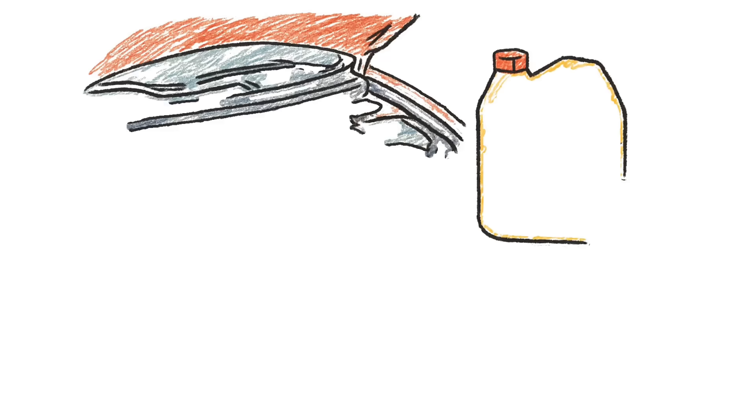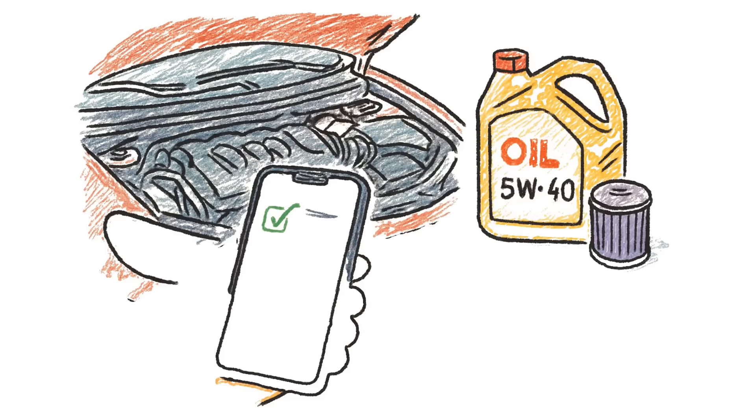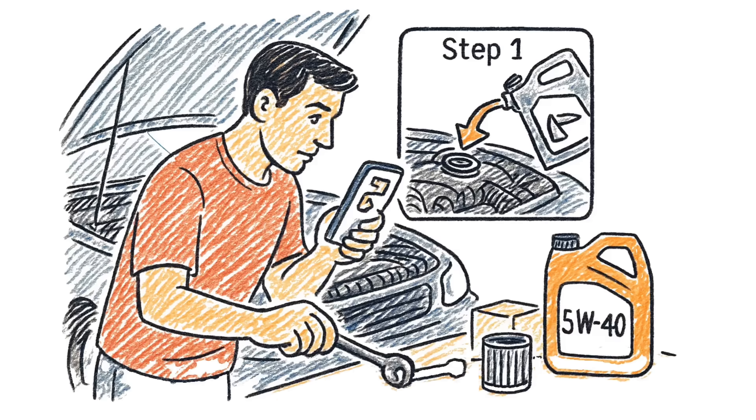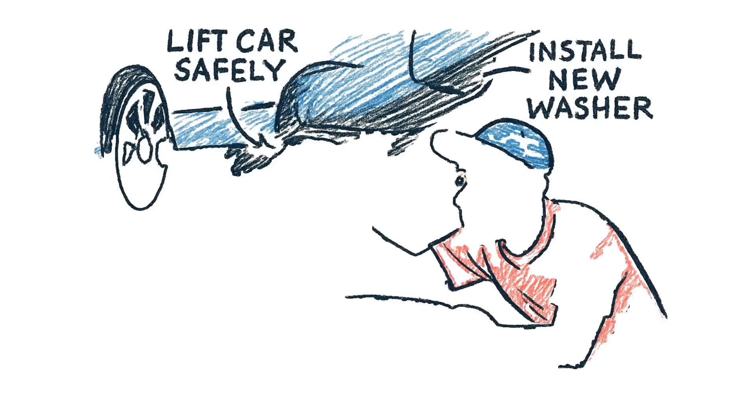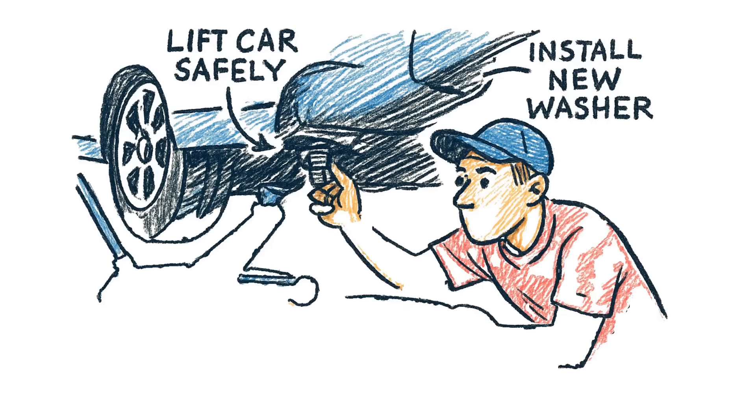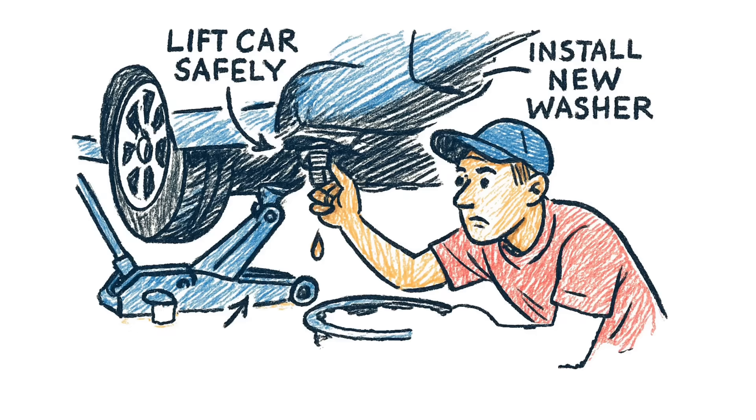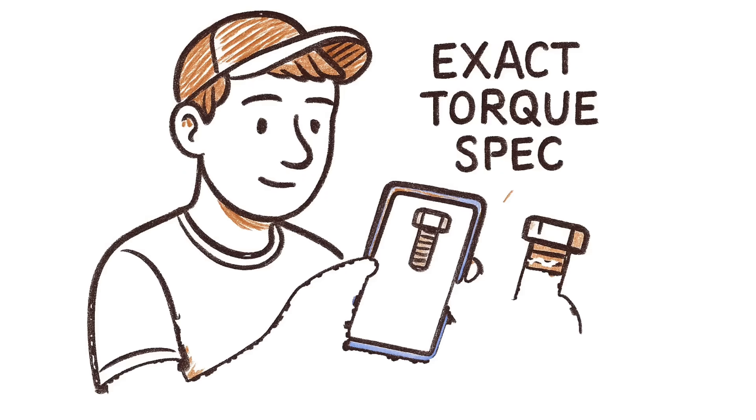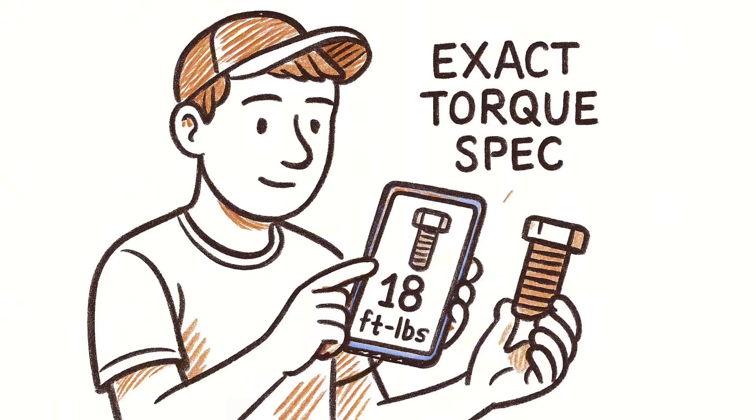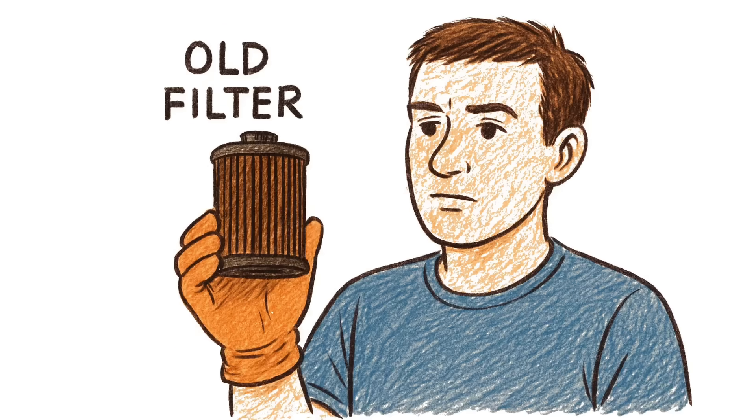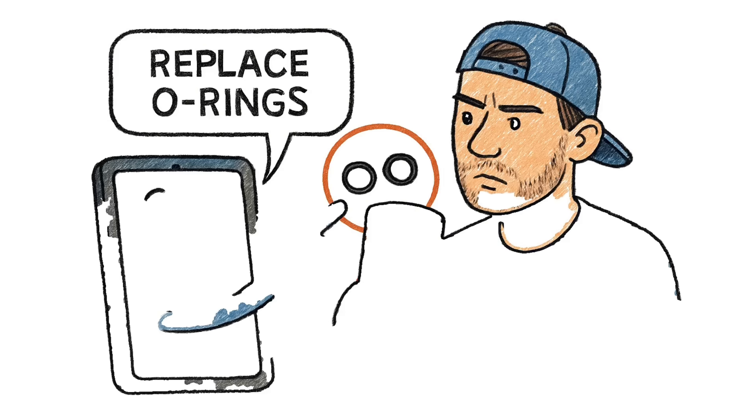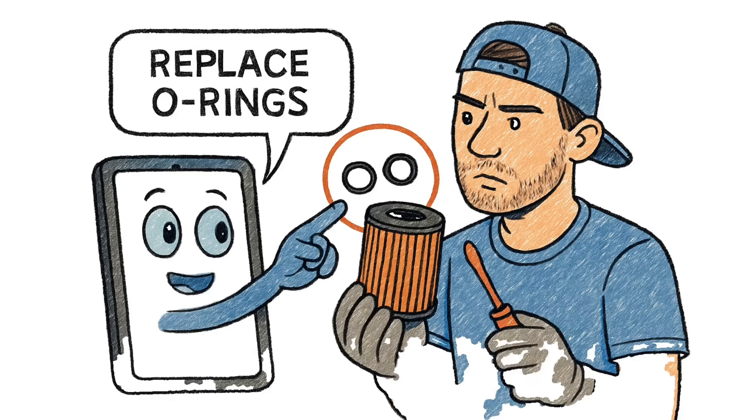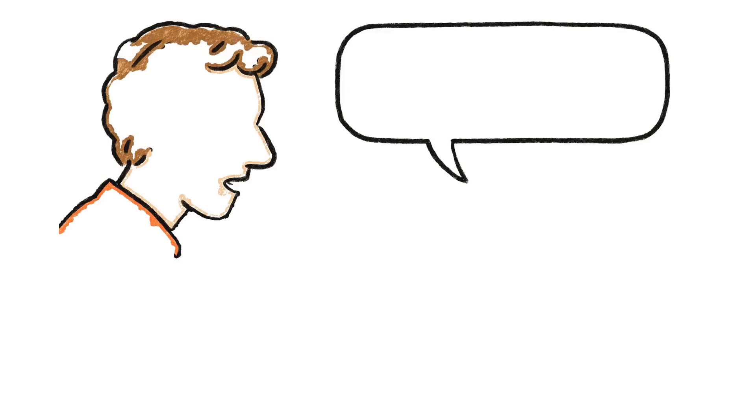Gemini instantly checks that he has the right oil, 5W40, the correct filter, and all the right tools laid out. Then it walks him through it, step by step. It guides him on lifting the car safely, points out the exact location of the drain plug, tells him where to position the drain pan, and reminds him to install a new washer. It even gives him the exact torque spec, 18 foot-pounds. No guessing. Then the guy holds up the old filter.